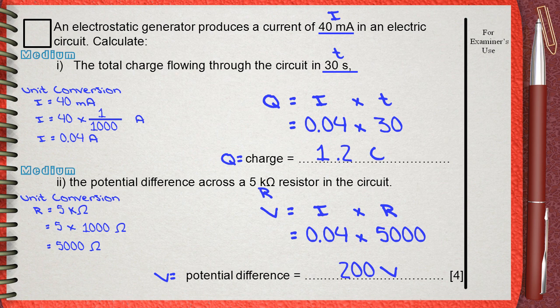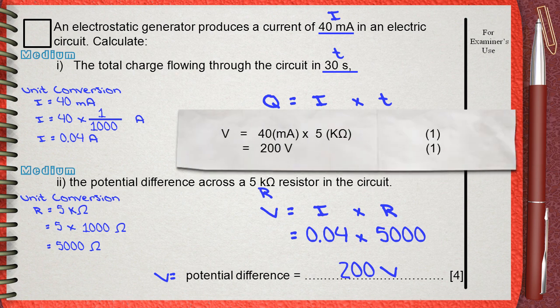Again, the mark scheme awards two marks for this question. One mark for the substitution, 40 mA times 5 kOhms. We already made our unit conversion. And the other mark is for the final answer. Again, there are no direct marks for the unit conversion steps. But if you do not make unit conversion, your final answer will be incorrect.